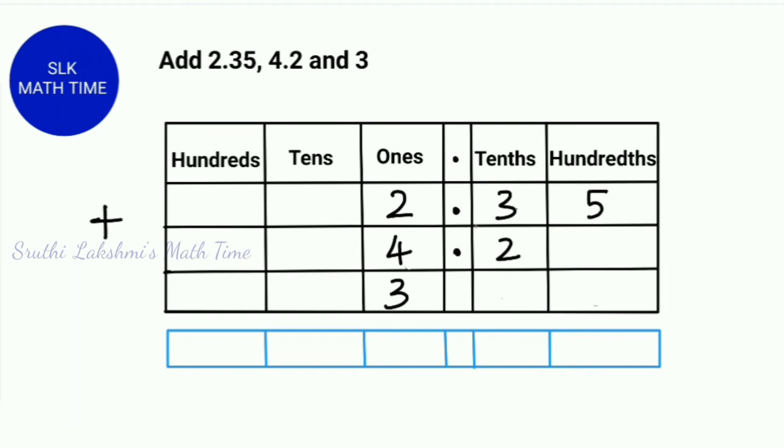The number of digits after the decimal point in 2.35 is 2. But in 4.2, we only have one digit after the decimal point, so we add a 0. And same with 3. This time we add a decimal point, then 2 zeros. 3.00 and 3 is the same. And 4.2 and 4.20 is also the same. When we add the zeros, it doesn't change the value of the number. Let's add: 5 plus 0 is 5, 3 plus 2 is also 5. Next, we write the decimal point straight down. Next, 2 plus 4 plus 3 which gives us 9. That means that 2.35 plus 4.2 plus 3 is 9.55.